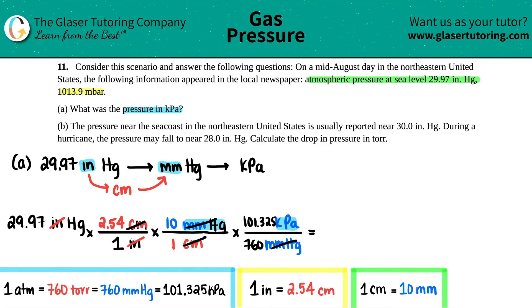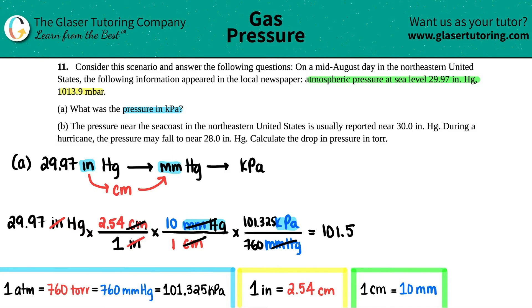So the full calculation is: 29.97 times 2.54 times 10 times 101.325 divided by 760. We started with four significant figures, so we end with four. The answer is 101.5 kilopascals, and that's equivalent to 29.97 inches of mercury. Letter A is done.